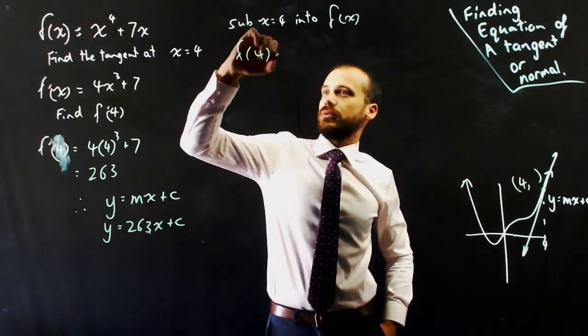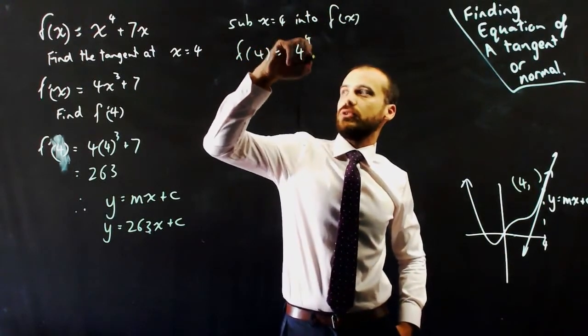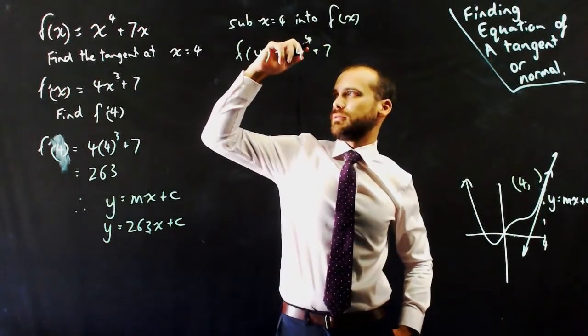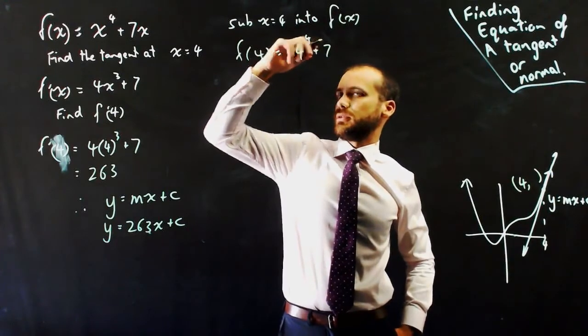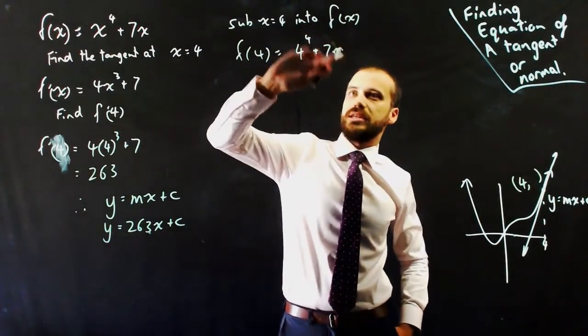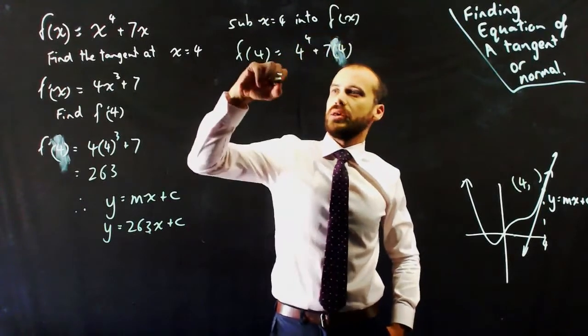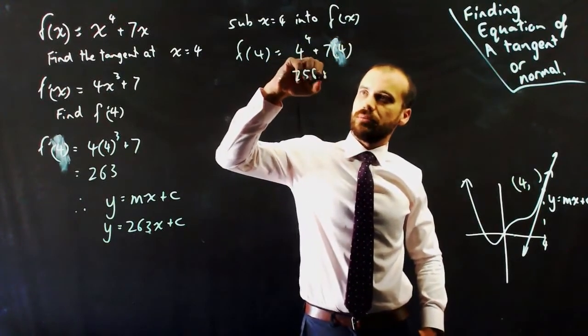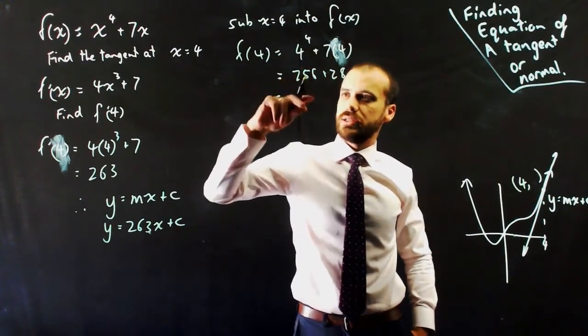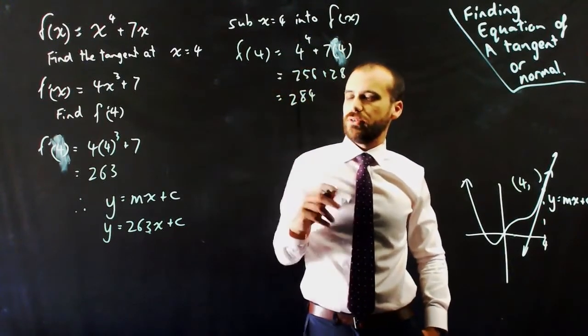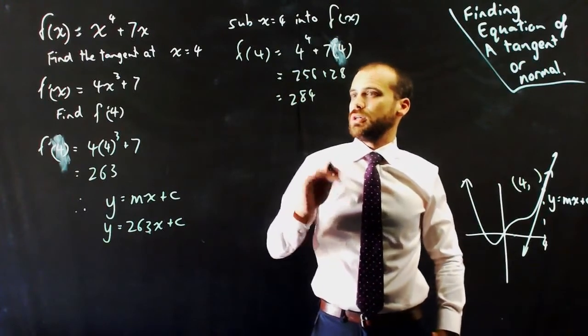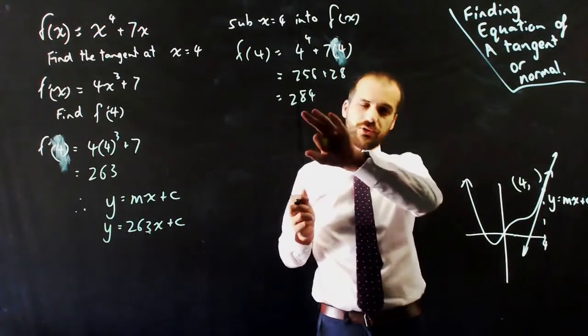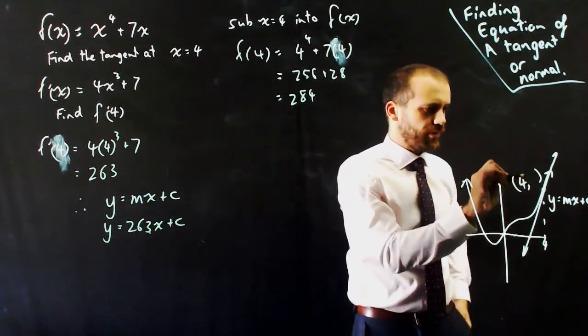So f(4) = 4⁴ + 7(4). Alright, 4 to the 4 is 256, plus 28. That's going to be 284. So that 284 represents this number here, that y value.